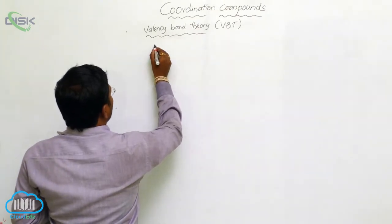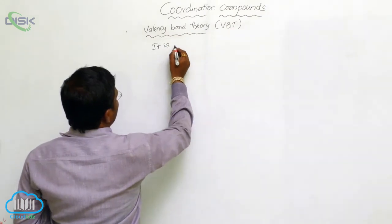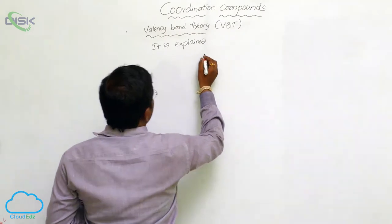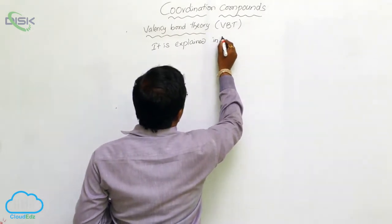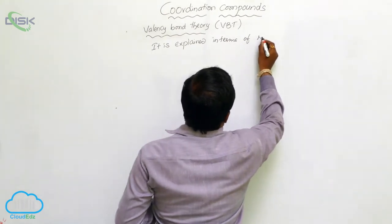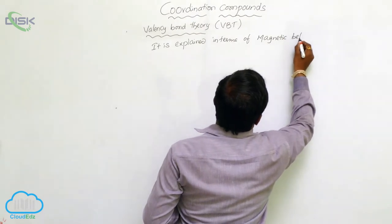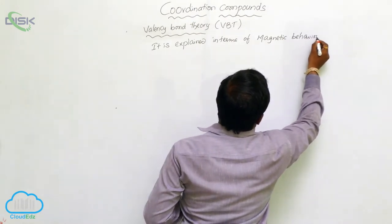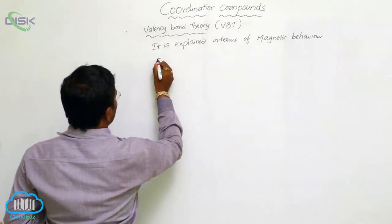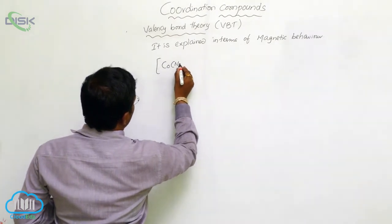According to Valence Bond Theory, the structure of coordination compounds is explained in terms of their magnetic behavior. Let us consider an example of [Co(NH₃)₆]³⁺.